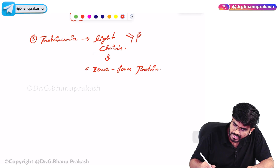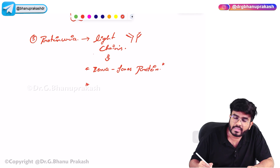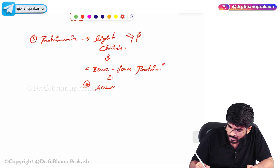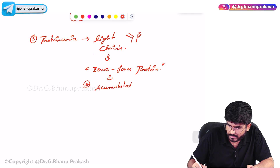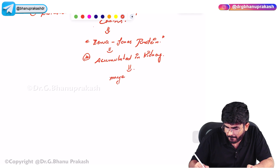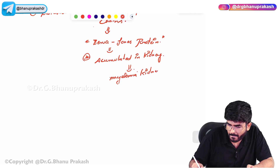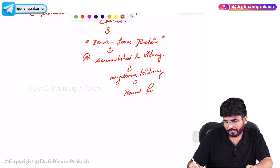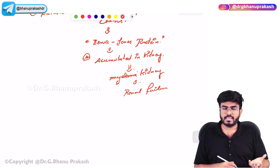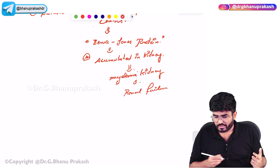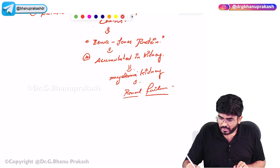These Bence Jones proteins sometimes accumulate in the kidney. They accumulate in the kidney and can lead to kidney failure. Such a kidney is called myeloma kidney, and there is a risk of renal failure because these light chains accumulate within the kidney. The kidney tries to reabsorb them but cannot fully do so, and renal function is greatly compromised.